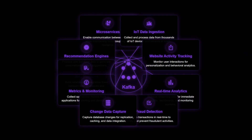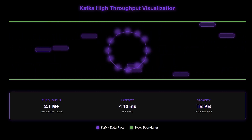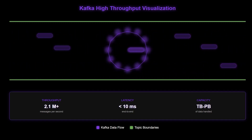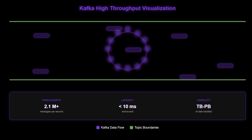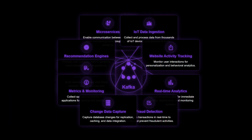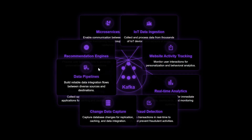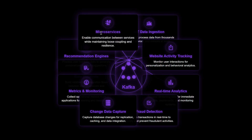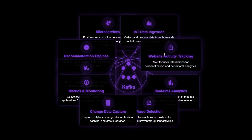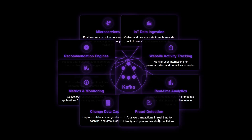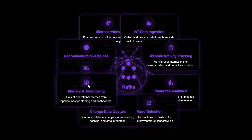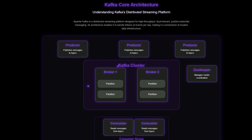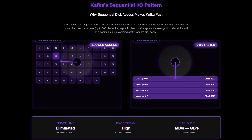Now let's talk about Kafka use cases. Kafka is essentially used for high-throughput and big data applications — things like log aggregation, stream processing, event sourcing, metrics collection, and activity tracking. The key takeaway is that Kafka excels whenever you need to reliably move large volumes of data between systems, especially when the order of messages matters. To summarize: Kafka's core architecture with producers, brokers, and consumers, its focus on throughput over latency, and brilliant design choices like sequential I/O and zero copy optimization are what make it so efficient.